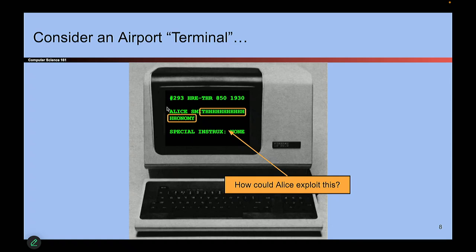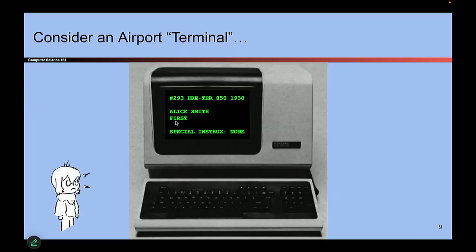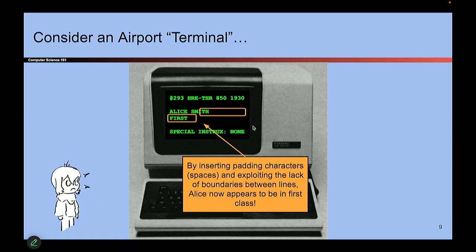Instead of putting H's, I could put space bars and 'first' — so 'Alice Smith' followed by a bunch of space bars followed by 'first.' Now when you check in, it suddenly looks like you're in first class. That's good for you, bad for the airline, but that's an attack we can do. If I wanted to be more creative, I could add more characters and change the instructions to say 'give me champagne' or 'don't lose my luggage.'